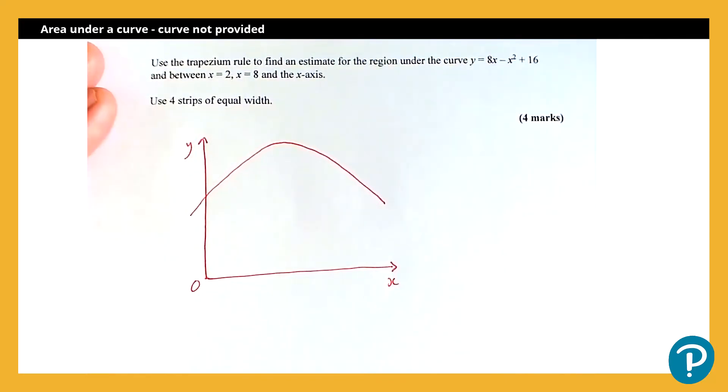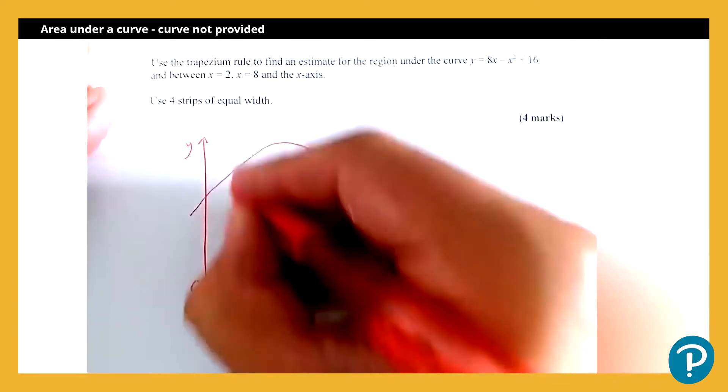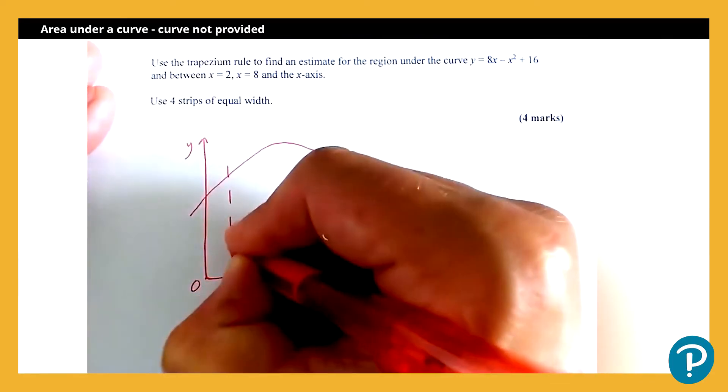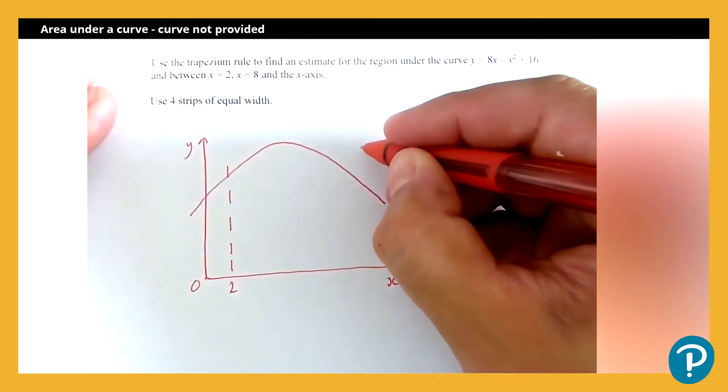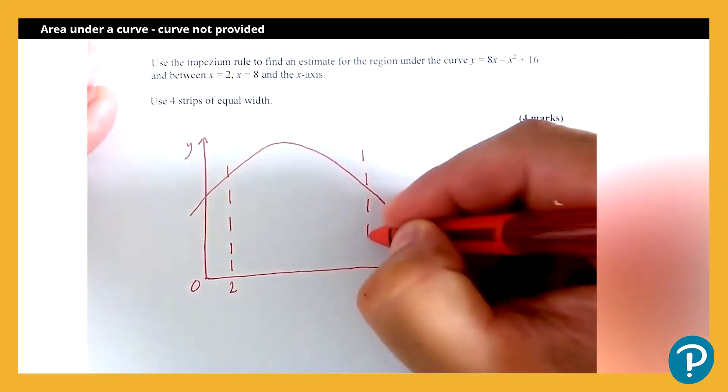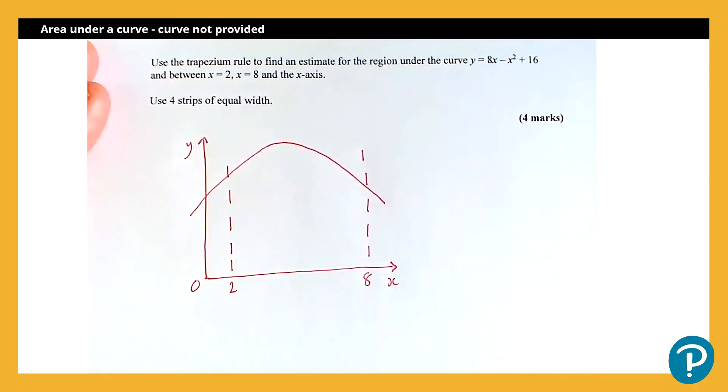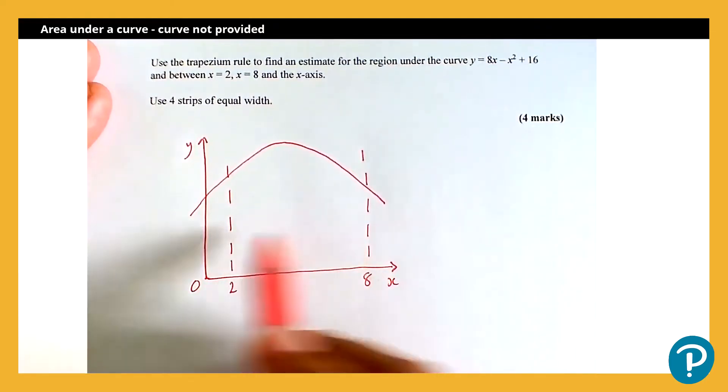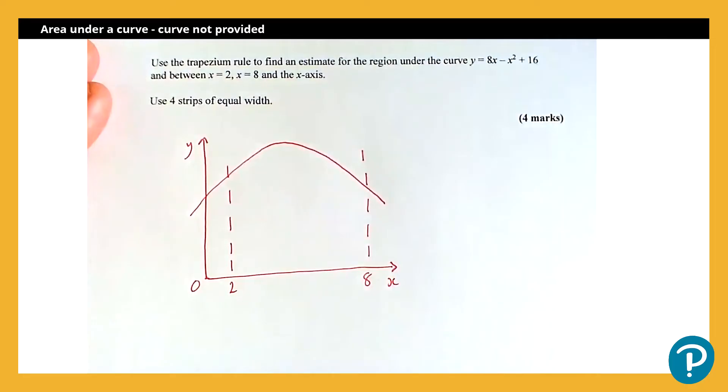I'm interested in looking at the region under this curve between x equals 2 and x equals 8. So I'm going to mark them on. So there's my x equals 2, and we don't need to be, as this is just a sketch for our own good, we don't need to worry too much. There's x equals 8, and we're interested in between these two lines under the curve and the x-axis. So it's this region here in the middle that we're interested in.